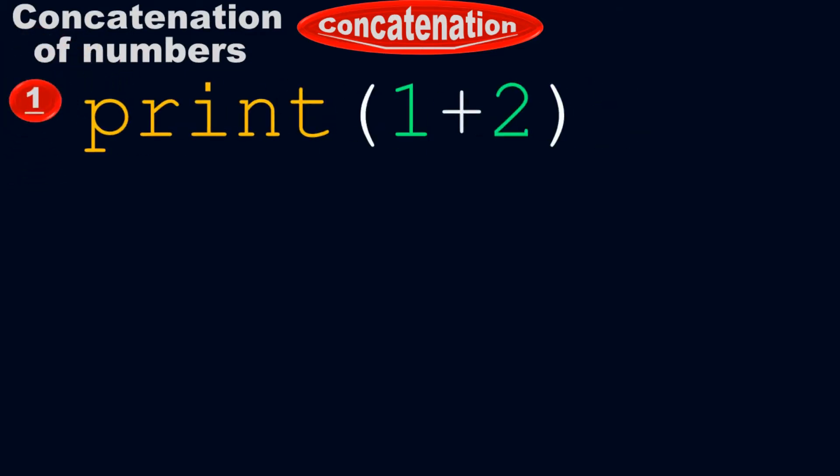Let's first talk about the concatenation of numbers — how we will do the concatenation of two numbers. Example number one: what if we have print of 1 plus 2? What will be the output? The output will be 3. It is a simple addition. So at this point, we cannot say that it is concatenation. It is not concatenation; it is a simple addition process. Print of 1 plus 2 equals to 3 — we add 1 to 2, which equals 3.